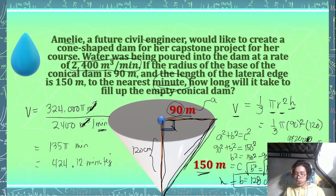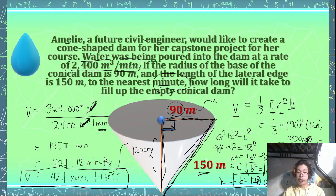So that's going to leave us with 0.12, and we can multiply that by 60 for 60 seconds. So therefore, exactly, it should take us 424 minutes and 7 seconds to fill this entire conical shape dam for Amelie. So the precise minute for that is 424 minutes and 7 seconds, and that's how we solved it.